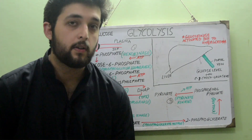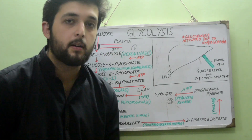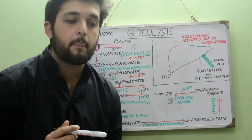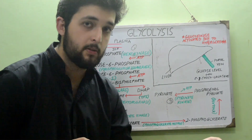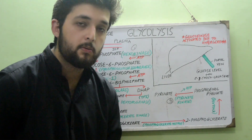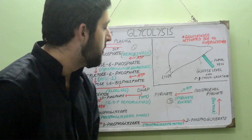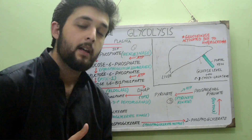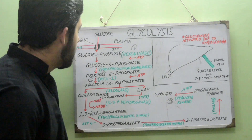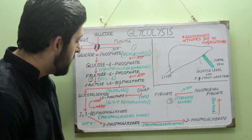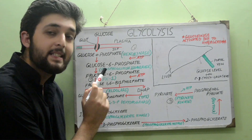High levels of AMP, adenosine monophosphate — the lowest-energy adenosine phosphate molecule — stimulate phosphofructokinase-1. ATP is high energy, ADP is intermediate, and AMP is low energy, so high AMP signals the need for more ATP production.